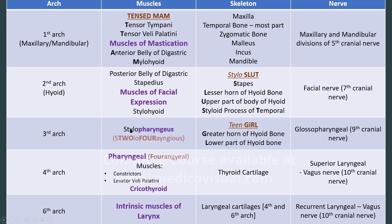The third and fourth arches — the stylopharyngeus and constrictor of pharynx — both derive muscles that help in swallowing. Cricothyroid and the intrinsic muscles of larynx are created by the fourth and sixth arch, and they help you in speaking.